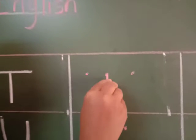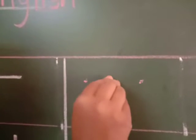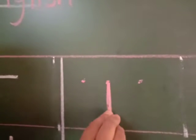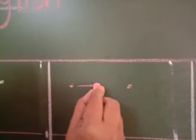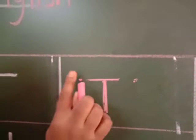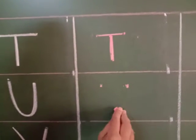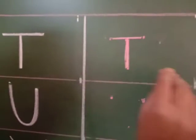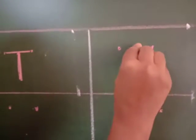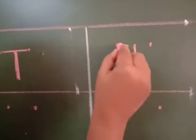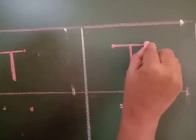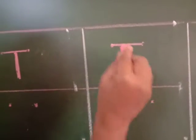So, for T, you will draw a standing line like this, and a sleeping line like this. Standing line and sleeping line. With the help of dots you will draw like this. So we are going to continue with T: standing line, sleeping line — standing line, sleeping line. It makes T!